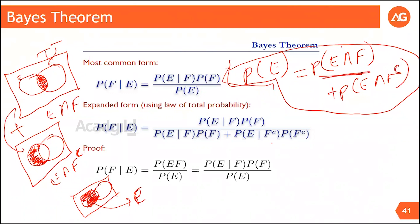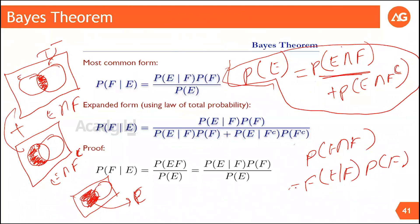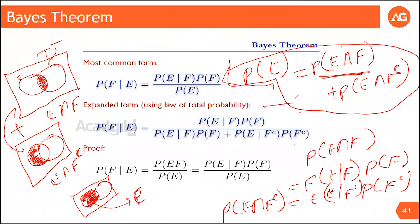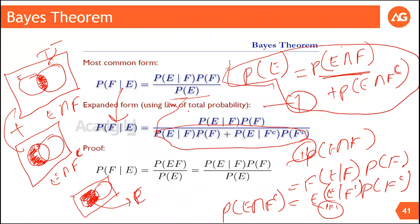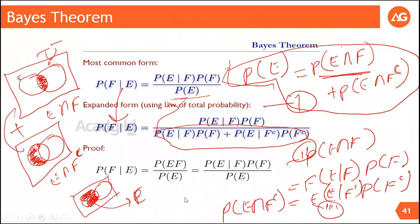We already have a formula: for any P(A intersection B), we can write it as probability of A given B times probability of B. So we write probability of E intersection F as probability of E given F times probability of F. Similarly for the complement term. Combining these equations by substituting into equation 1, the denominator gets expanded accordingly. This is called the Bayes theorem.